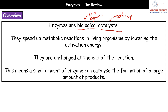The way enzymes do this — and hopefully you remember from GCSE — is that they lower the activation energy. The activation energy is the minimum energy required to actually start a reaction. Another key fact is that at the end of the reaction they are catalyzing, enzymes are unchanged. Because of that, we only require a very small amount of enzyme to catalyze the formation of lots of product — small amounts can make a lot of product.